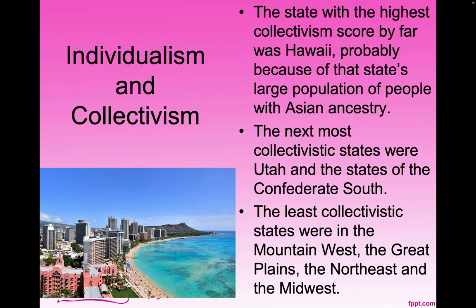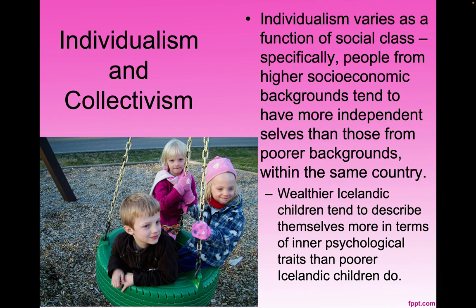The next most collectivistic states were Utah and the states of the Confederate South — Tennessee, Alabama, Georgia, South Carolina, North Carolina, Texas, Arkansas, and Mississippi. The least collectivistic states were in the Mountain West, the Great Plains, the Northeast, and the Midwest.